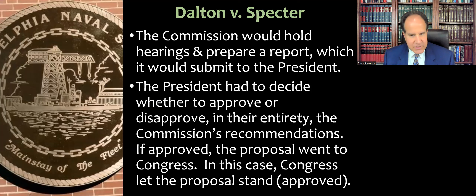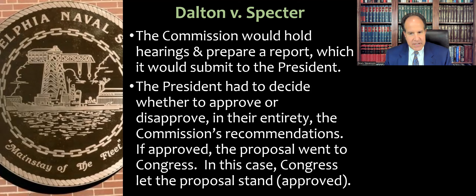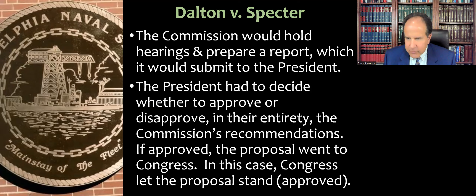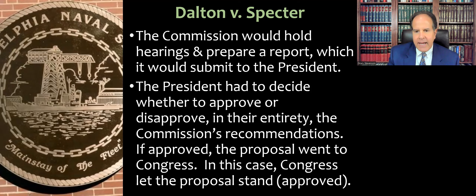So we start with the Secretary of Defense, go to the commission, which can make whatever changes they want and hold hearings, and then it goes to the president. The president had to decide whether to approve or disapprove the recommendations in their entirety, or take no action at all — the president couldn't pick and choose or make any changes. It was an all-or-nothing approval or disapproval. If approved, the proposal then went to Congress for a streamlined approval vote or an opportunity to veto it. In this case, Congress let the proposal stand and overwhelmingly approved it.